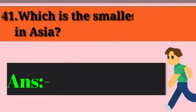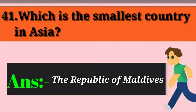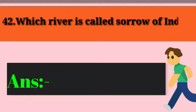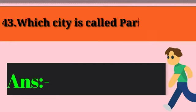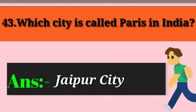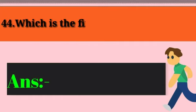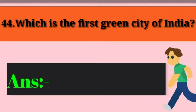Question 41: Which is the smallest country in Asia? Answer: Republic of Maldives. Question 42: Which river is called the Sorrow of India? Answer: Kosi River. Question 44: Which city is called the Paris of India? Answer: Jaipur. Question 44: Which city is the first green city of India? Answer: Varanasi.